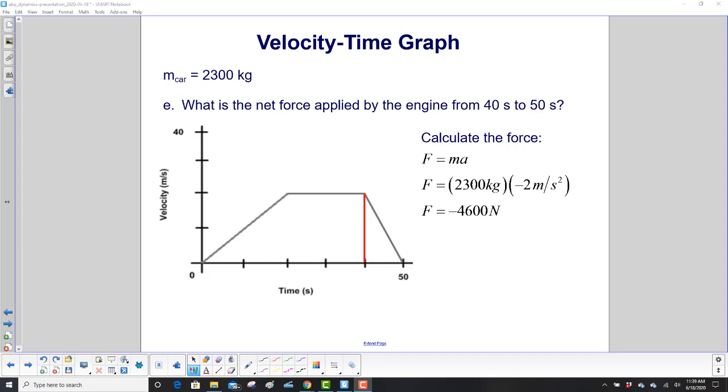Now calculate the force from 40 to 50 seconds. F=ma: the mass is positive, the acceleration is negative. We get a negative force of 4,600 newtons, which means the force has to be applied to the left, the negative side. If the car was moving to the right and you have a negative force, it slows down. You've put the brakes on.